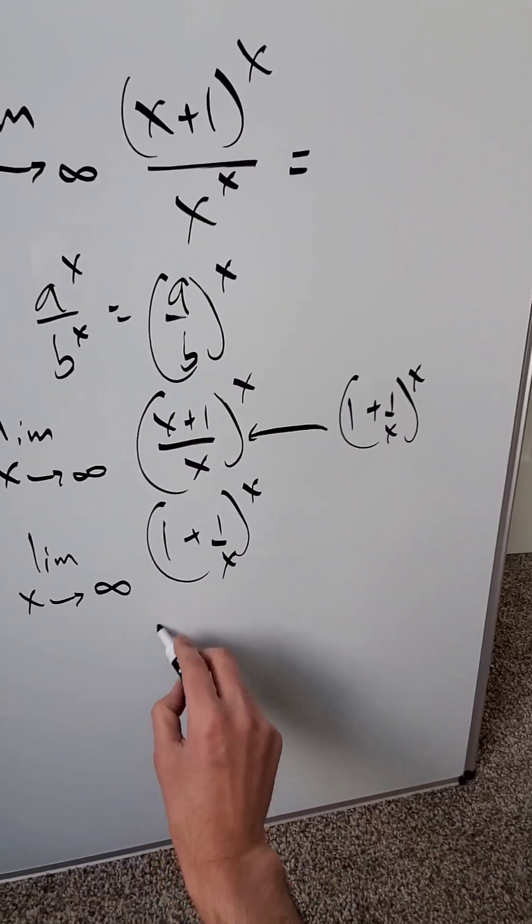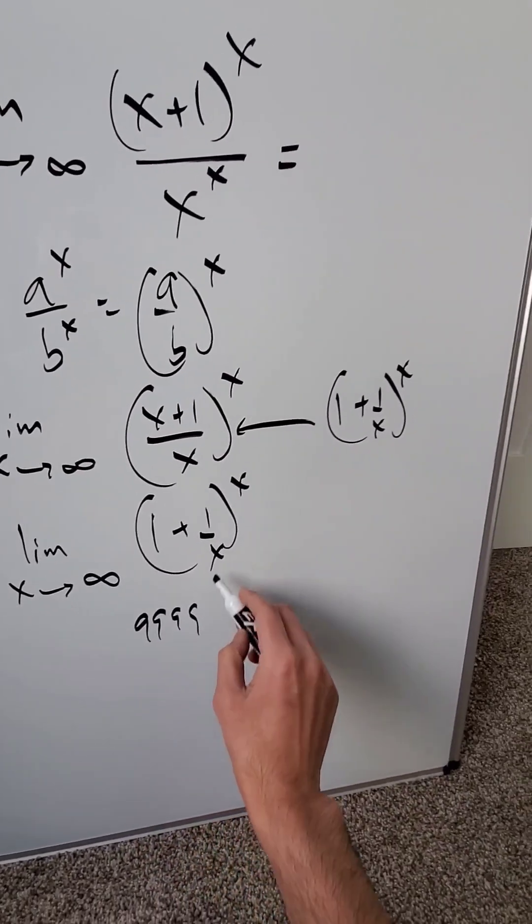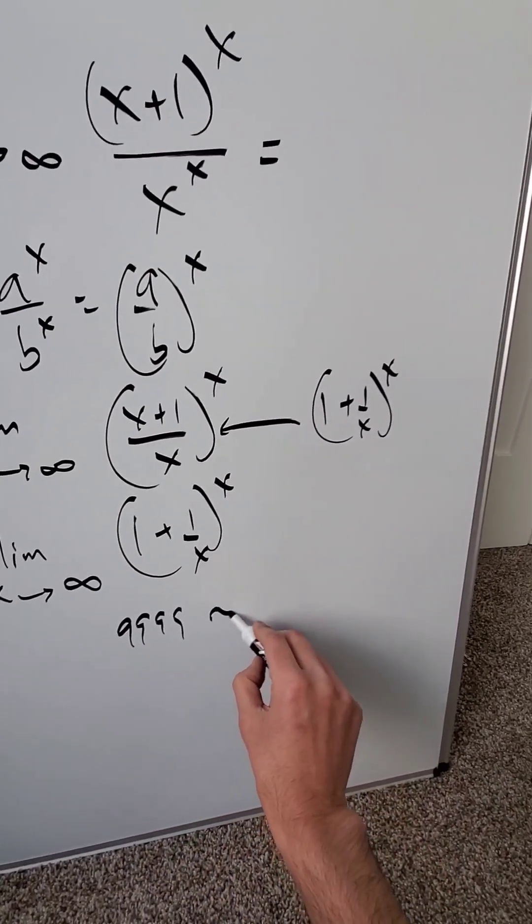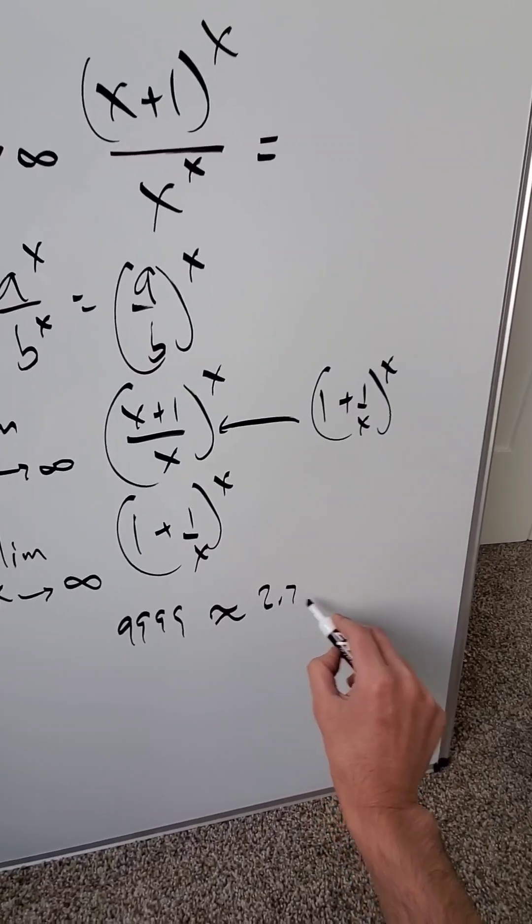You can evaluate this easily. Pick a value like 9999, run it using your calculator. You'll see you'll get a value like 2.7 something.